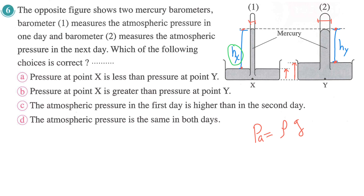The pressure comes from the column of mercury at point Y and at point X — they are both at the same level. So we can cancel the first two choices; those are wrong. The correct answer is that HX here is higher, meaning both barometers measure the same atmospheric pressure.